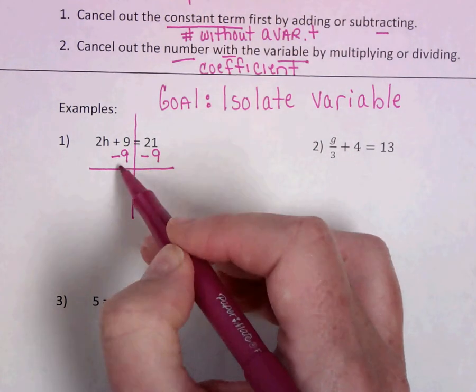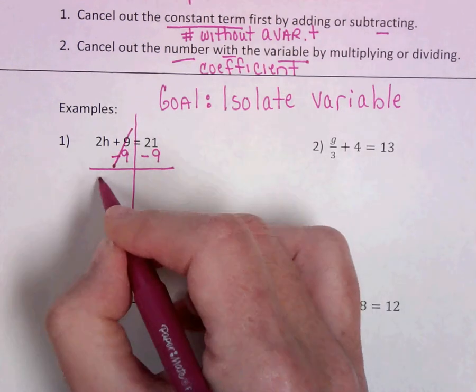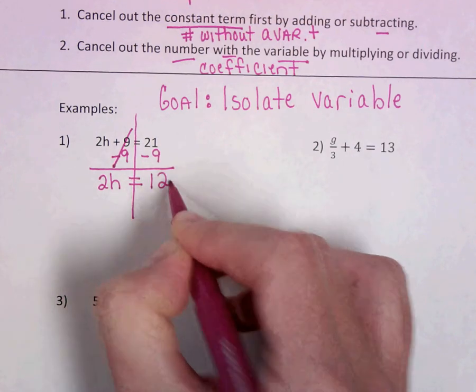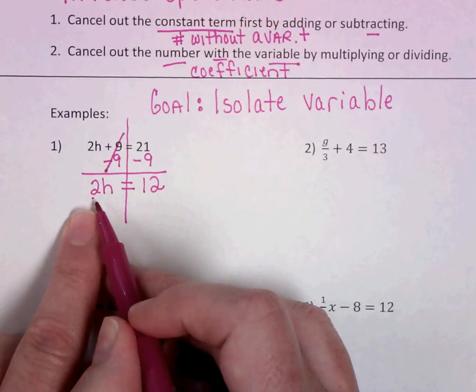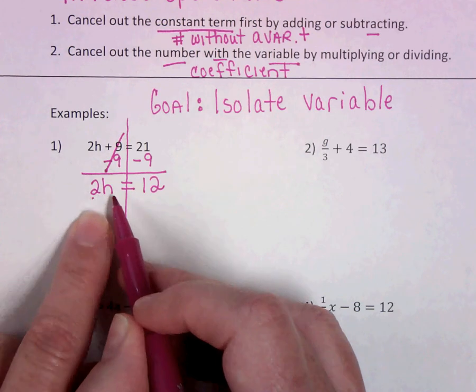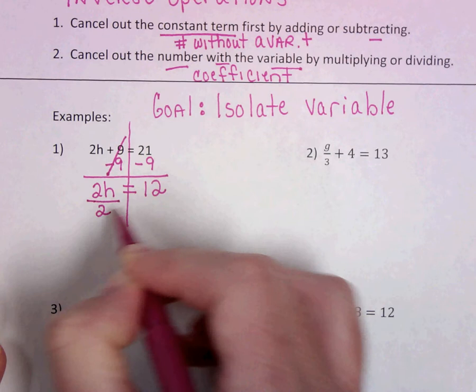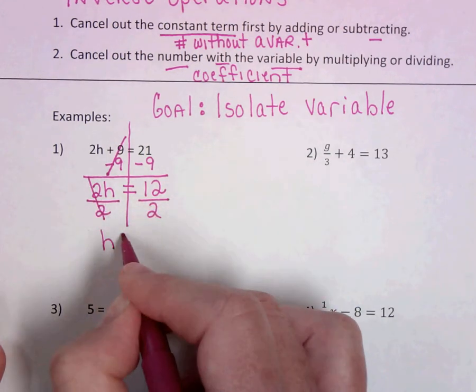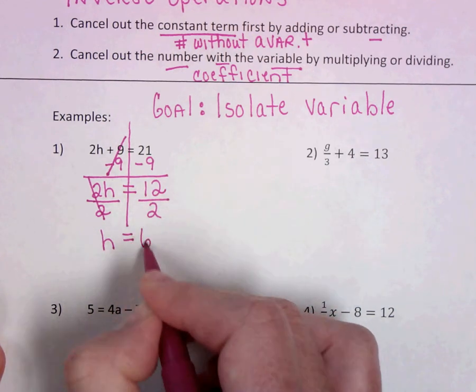Okay, so remember the reason we subtracted here was to make a zero pair. We cancel that out, and so now we're left with 2H equals 12, and now we need to cancel out the number with the variable, with 2. Remember, this means 2 times H, so the opposite, the inverse, is to divide by 2. That makes that 1H equals, and 12 divided by 2 is 6.